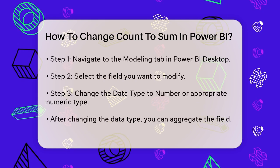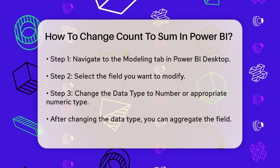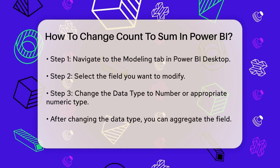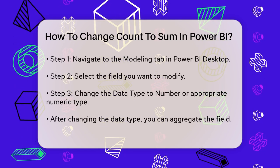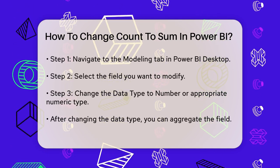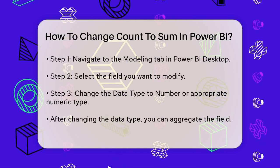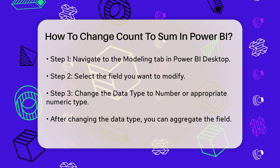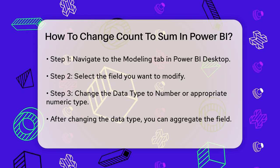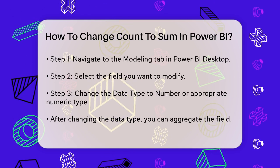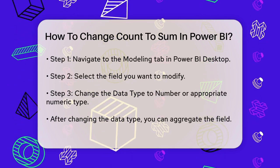Here's how you do it. Go to the Modeling tab in Power BI Desktop. This tab allows you to change the properties of your fields. Find the field you want to change and click on it. In the Modeling tab, you'll see an option to change the data type. Make sure to set the data type to Number or the appropriate numeric type for your field.